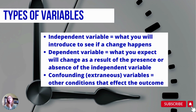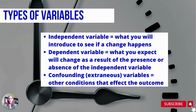Then we have confounding or extraneous variables. These are other conditions that could affect the outcome. So let's say someone is also going to a spa every day while they're getting their CBT intervention done — that might decrease their depression as well, but you haven't controlled for that. There are other reasons their depression went down. That's it, and thanks for watching.